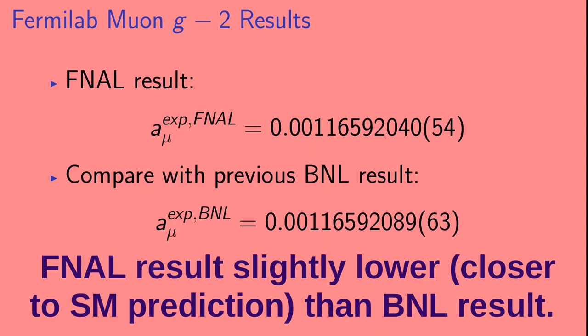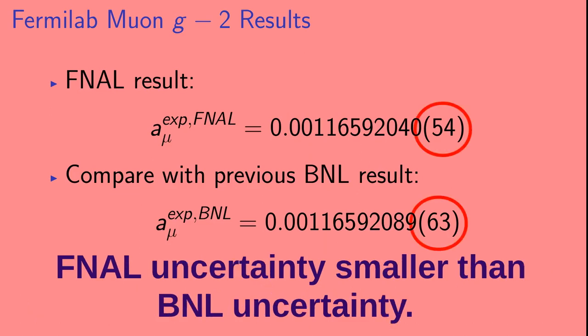Next, the Fermilab result is slightly lower, and therefore slightly closer to the standard model prediction than the Brookhaven result. And lastly, the Fermilab uncertainty is smaller than that on the Brookhaven result.